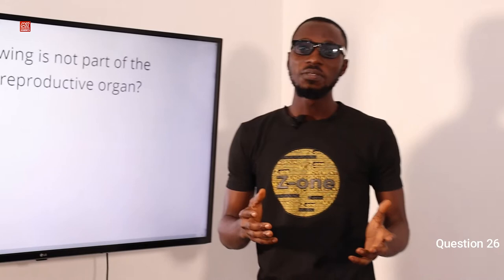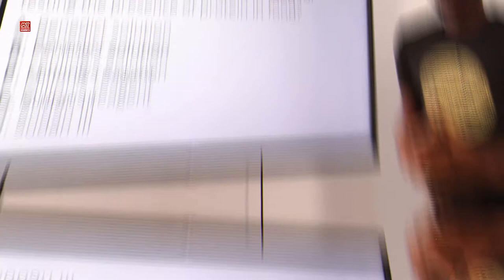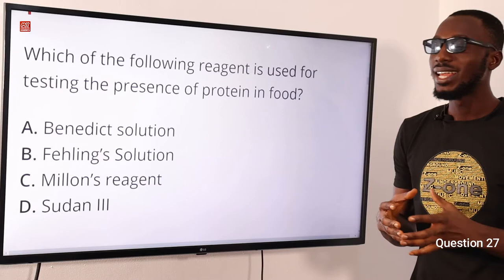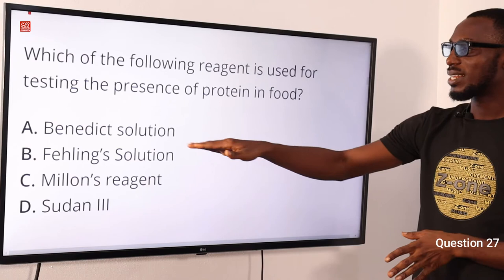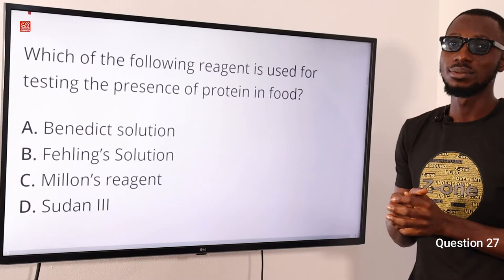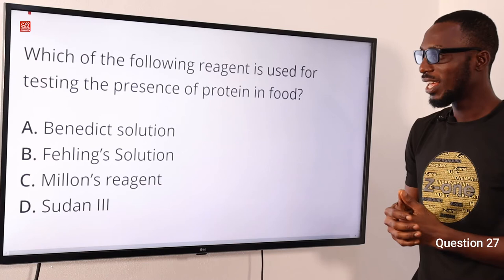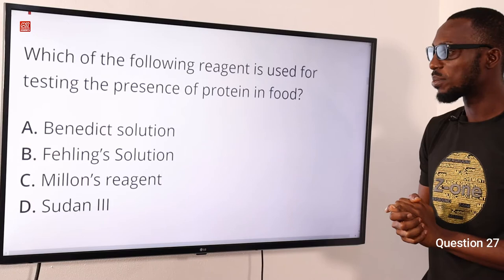Don't forget to hit the like button, click the subscribe button, and tap on bell notification so you can get an alert immediately when we upload the next video clip. Question 27: Which of the following reagents is used for testing the presence of protein in food? That is the Million's reagent. The Benedict solution or Fehling solution is used to test for sugars generally. Sudan III is used to test for fats. So the correct option is option C for Million's reagent.